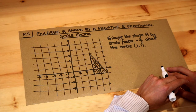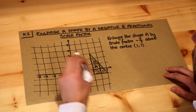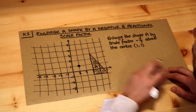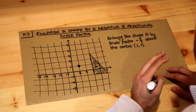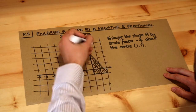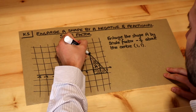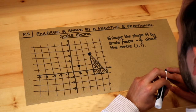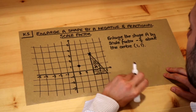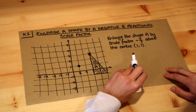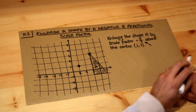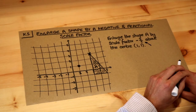Let's start by drawing on the centre (1, 1) — so that's here, the centre of enlargement. What we do is take each point on this shape, take each of the distances from the centre of enlargement, and multiply each of those distances by the scale factor of minus 1.5.